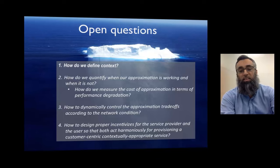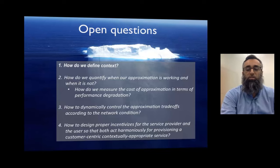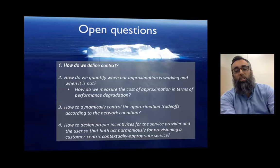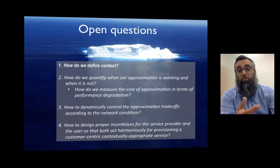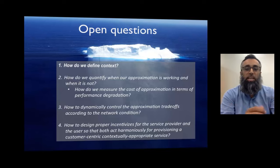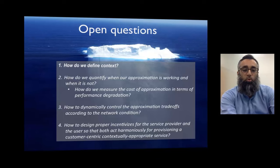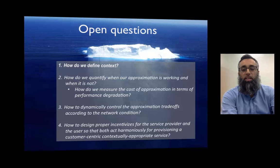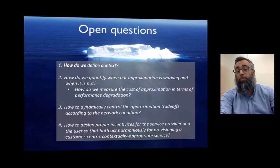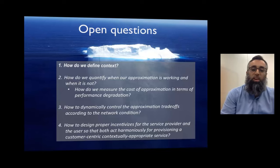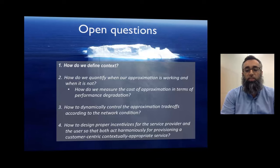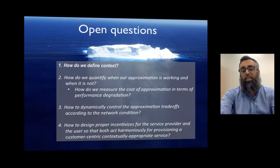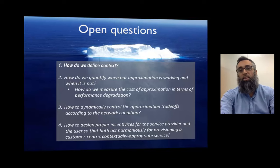Some open questions include: how do we define context, given that there may be many contexts in a single interaction — the user's context, the application's context, the service provider's context — and sometimes they conflict? How do we quantify when our approximation is working and when it is not, ensuring we are not approximating away factors that are important for network performance? How do we dynamically control approximation trade-offs according to network conditions, and how do we design proper incentives for everyone to behave optimally?